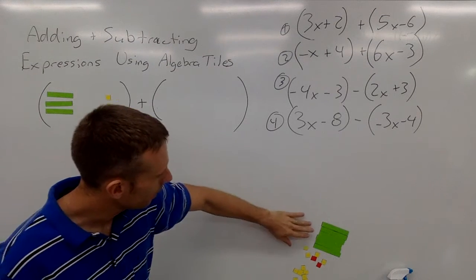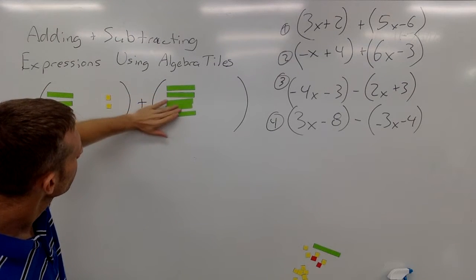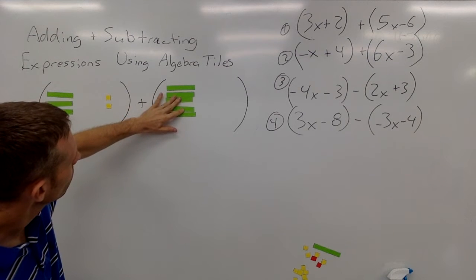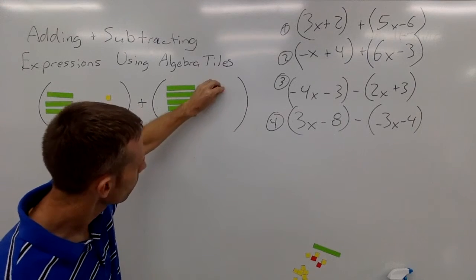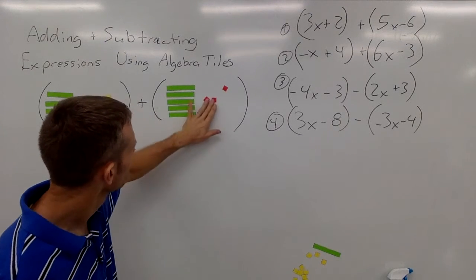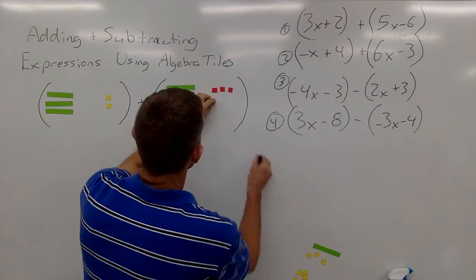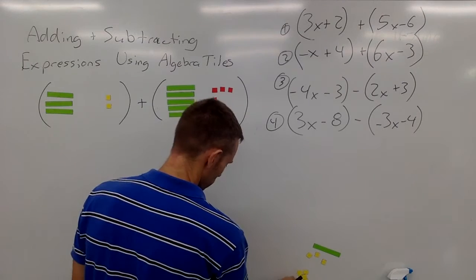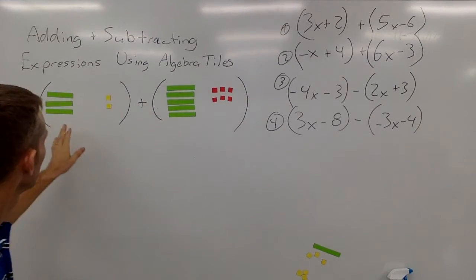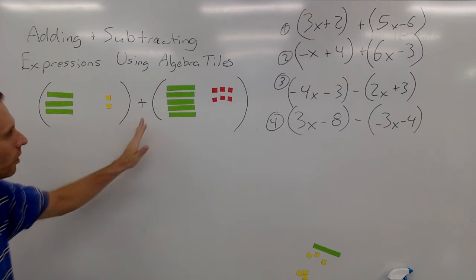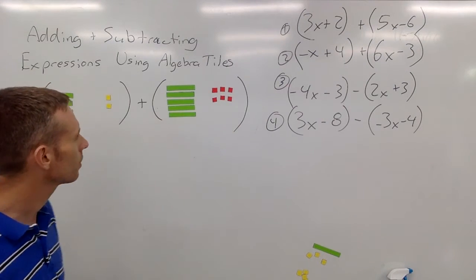Now, I have a positive 5x, and then I have a negative 6. So positive 3x plus 2, plus positive 5x minus 6, or negative 6.